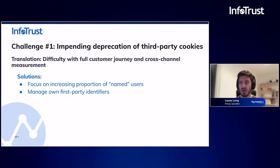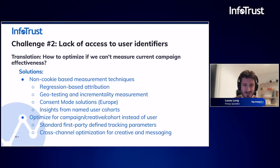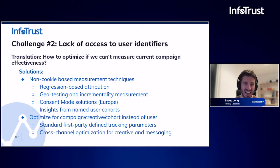That's challenge number one around the deprecation of third-party cookies. Challenge number two is a little bit broader — beyond just third-party cookies, it's the lack of identifier access generally hindering various measurement and optimization use cases. This translates specifically to the problem of: how can I optimize without the ability to measure current campaign effectiveness? Traditionally, third-party cookies and other cross-channel identifiers have made this practice easy, at least in principle. But in the absence of these solutions, how do we approach attribution and be able to optimize future activities from past results?